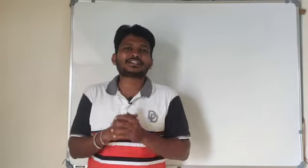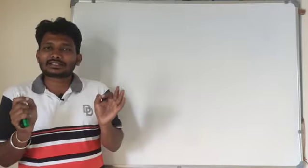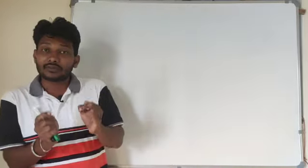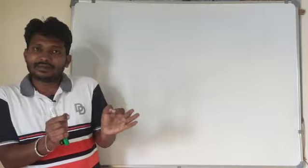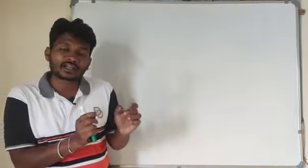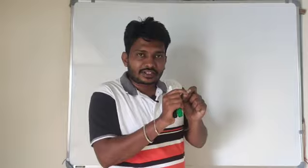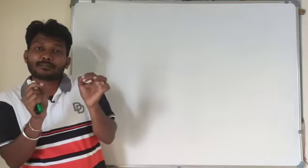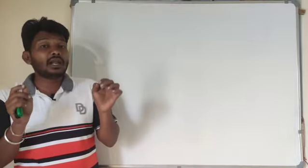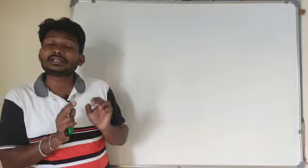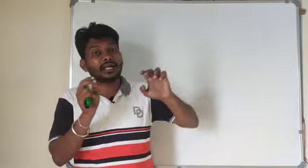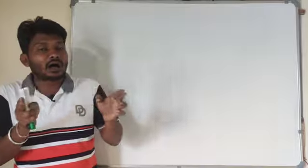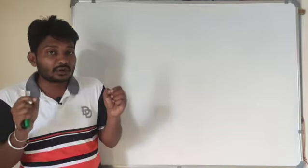Hello dear students, welcome back to physics online session. In the last chapter we discussed concepts related to electrodynamics. We came to know that current means the rate of flow of charge — when a charge particle moves from one point to another, current is produced. In the next chapter, we will understand one more property of electrodynamics: when a charge particle moves, along with the current, one more field is going to be produced.